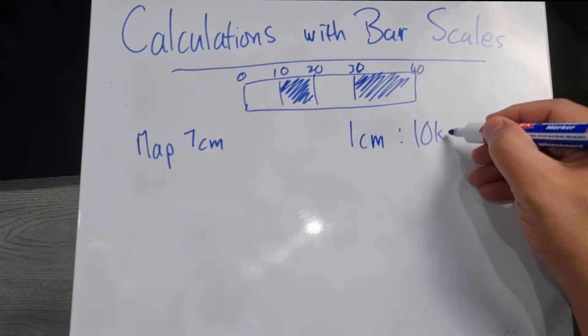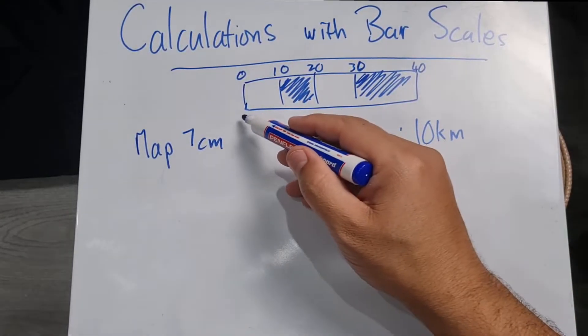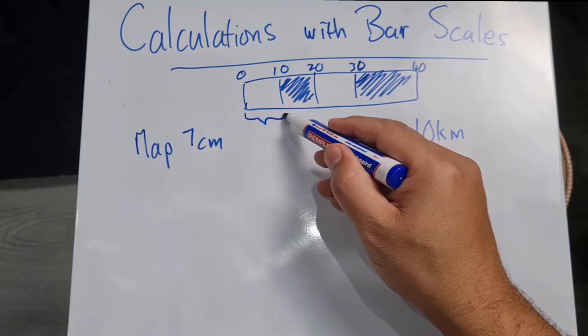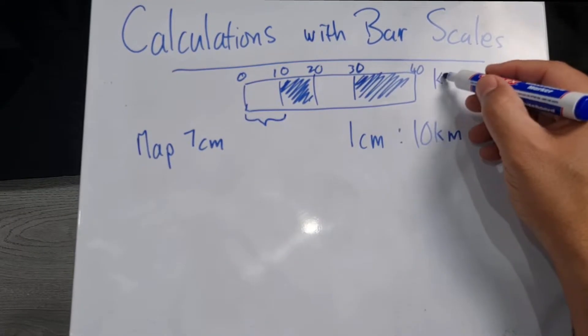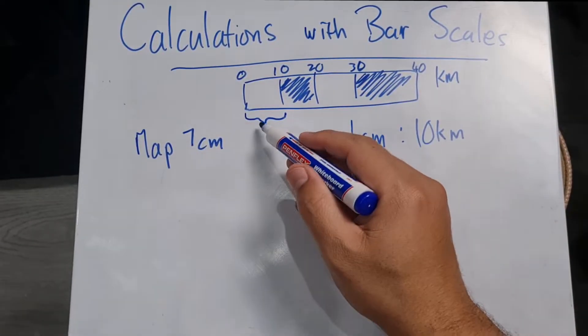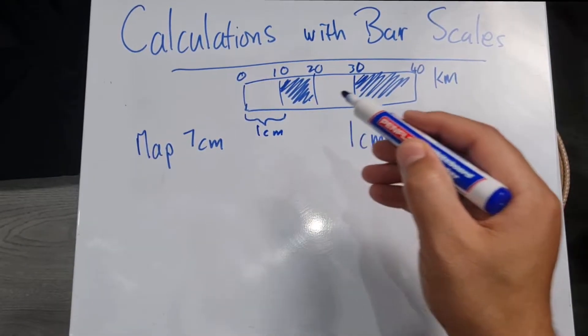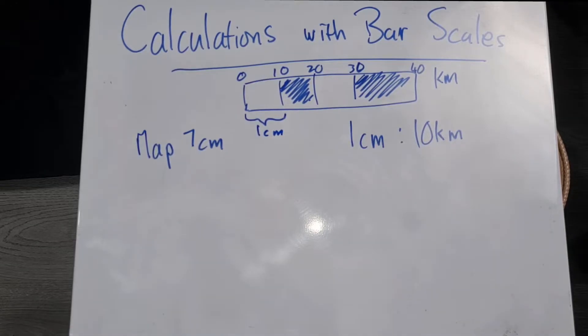In other words, the distance from zero to 10 kilometers over here, because this is all in kilometers, this is one centimeter, and that information they would give you. Okay, so once we've got that, we want to now get to our seven centimeters. So what are we going to do? In order to get to seven centimeters, I would have to multiply by seven.